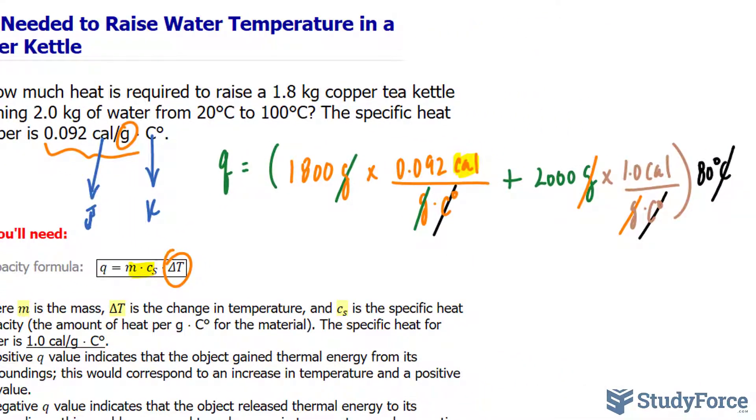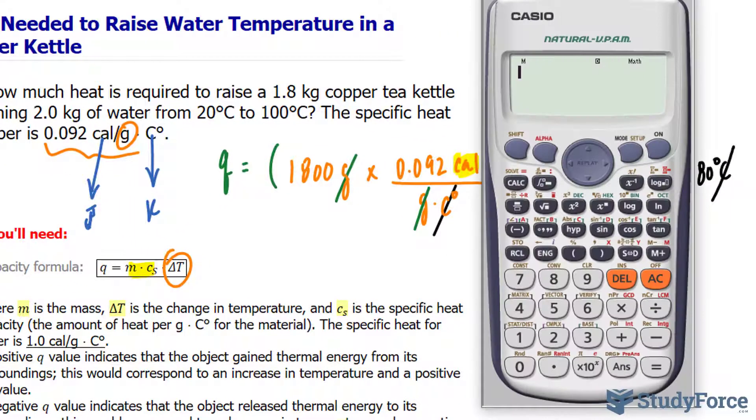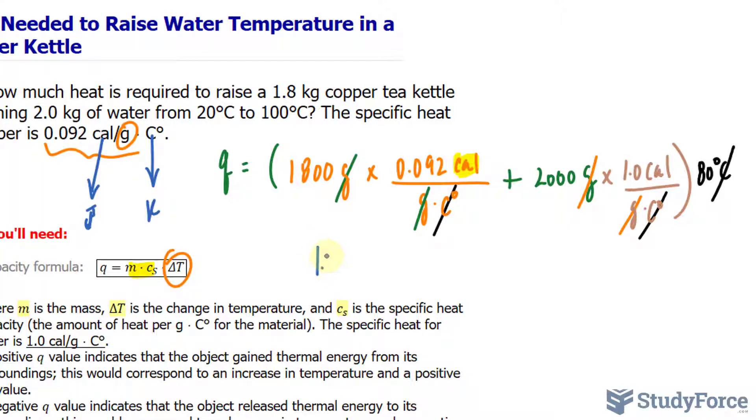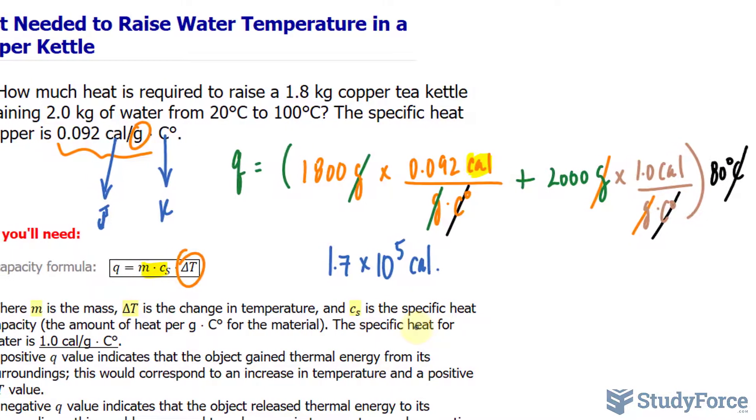Let's go ahead and multiply this out. It's a simple calculation. We have 1,800 times 0.092 plus 2,000 times 1, which is the same thing, multiplied by 80. And we get 1.7 times 10 to the power of 5. 1.7 times 10 to the power of 5 calories is the amount required to raise this water from 20 degrees to 100 degrees.